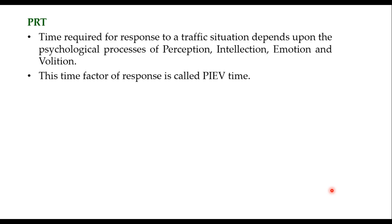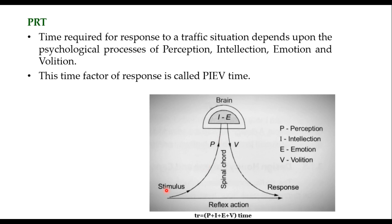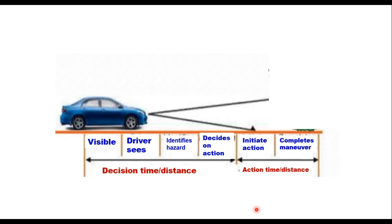The perception reaction time is the time required for response to a traffic situation. It depends upon the psychological processes of perception, emotion, and volition — collectively called PIEV time. When a stimulus is generated (in our case, a pedestrian on the road), it is perceived by the brain; then intellection and emotion occur as actions within the brain, and then a volitional response comes out. The time taken from stimulus to response is called the perception reaction time or PIEV time.